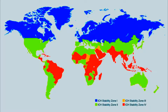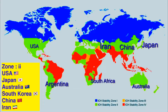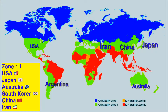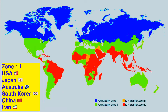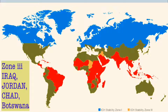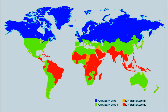Zone 2 is shown in yellow and includes countries such as the USA, China, Japan, Australia, South Africa, Israel, Iran, North Korea, and South Korea. Zone 3 includes a smaller set of countries such as Iraq, Jordan, Chad, and Botswana.